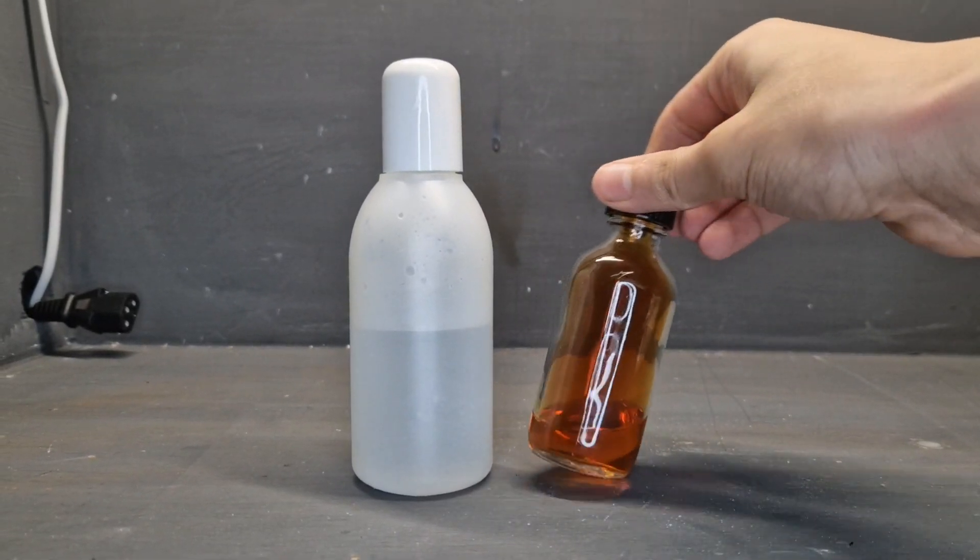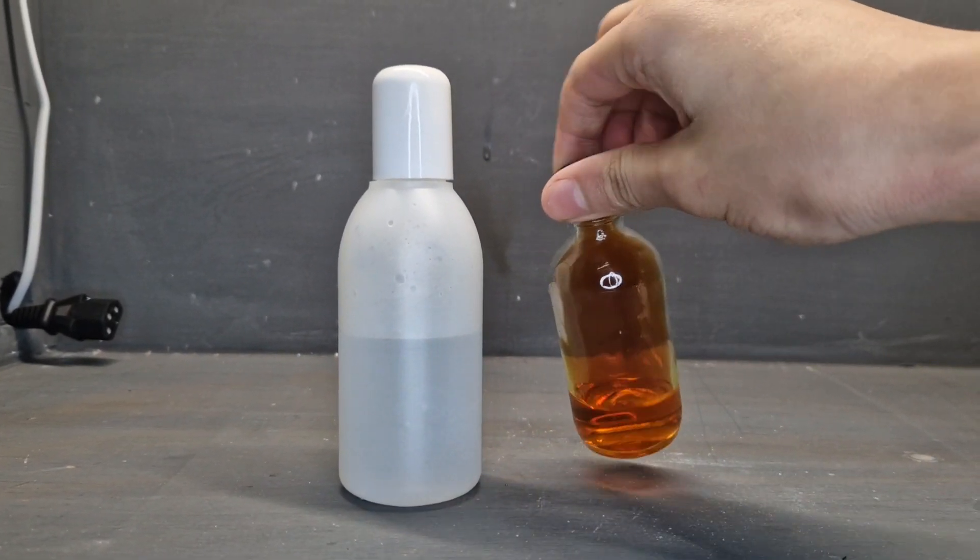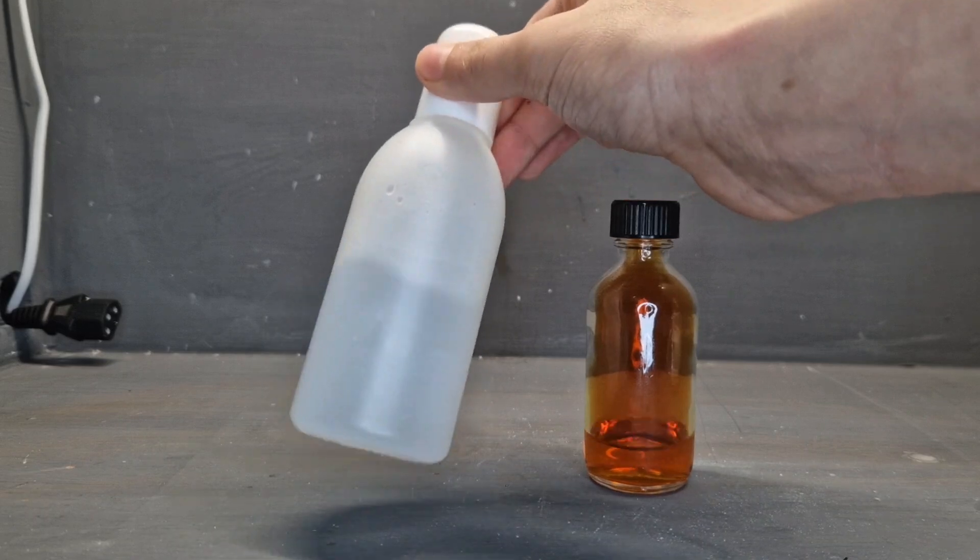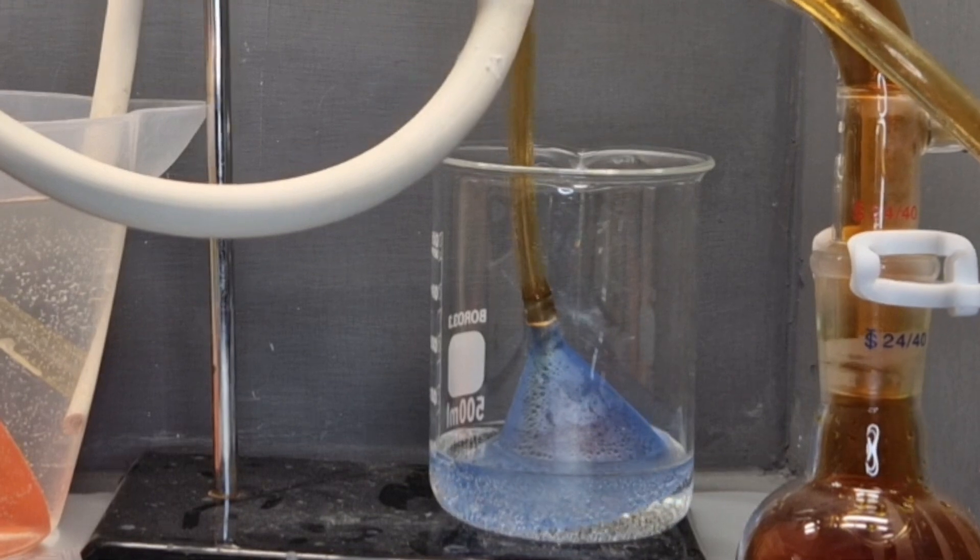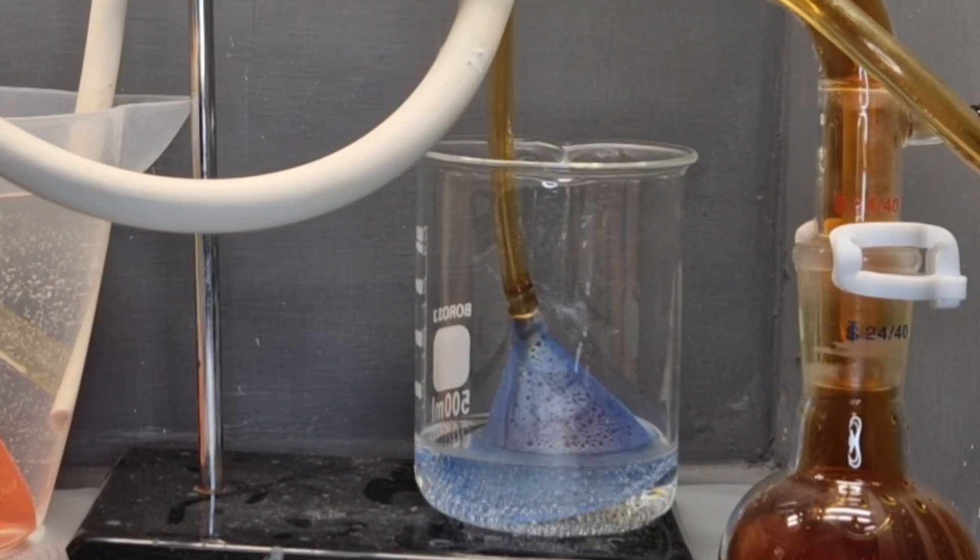So on the right there we have around 15ml of fuming nitric acid that we just made. Now the bottle on the left we have dilute nitric acid that we made by bubbling the nitrogen dioxide through a solution of weak hydrogen peroxide.